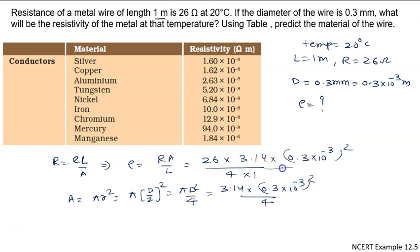We just calculate this value with the help of the calculator. You can calculate and it will be 1.84 × 10^-6 ohm·meter. So resistivity will be 1.84 × 10^-6 ohm·meter.